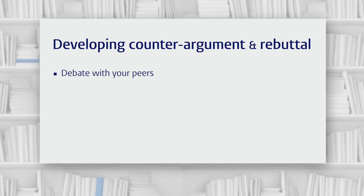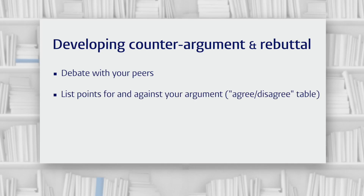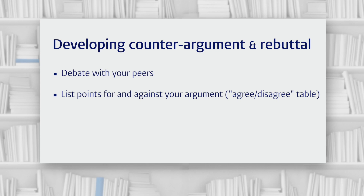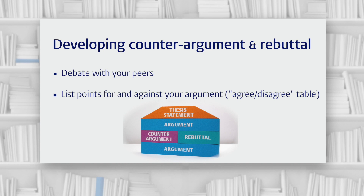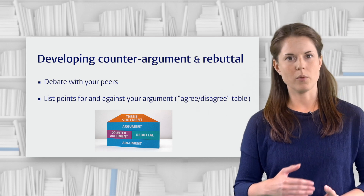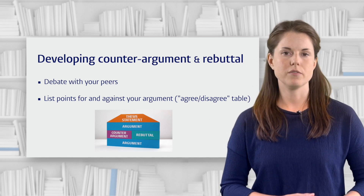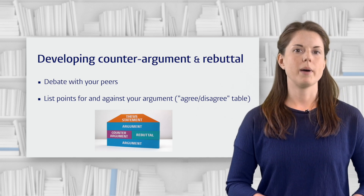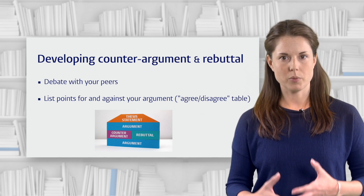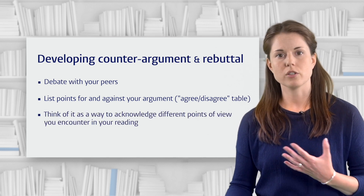There are different ways to develop your counter-argument and rebuttal sequence. One is to debate with your peers — one person asserts their argument and the other tries to counter it. Often other people can spot weaknesses in your argument that you weren't aware of. If you don't have someone to debate with, you can do it yourself by listing points for and against your main argument. Then you can develop one or more of the 'against' arguments as a counter-argument and come up with a rebuttal. You should also think of counter-argument and rebuttal as a way to acknowledge different points of view you encounter in your reading — gathering sources which don't agree with your argument or which offer a contrasting point of view.